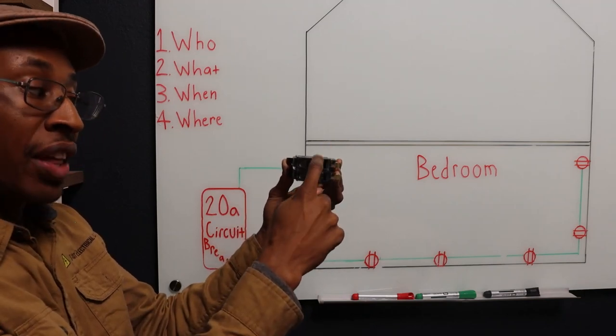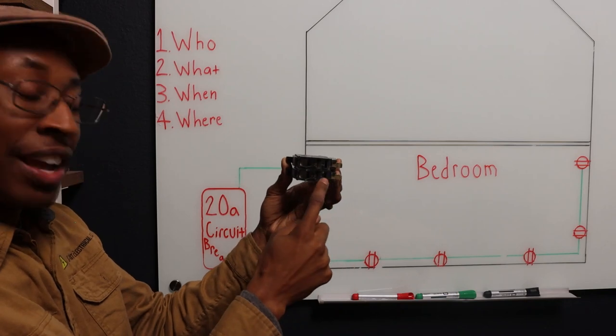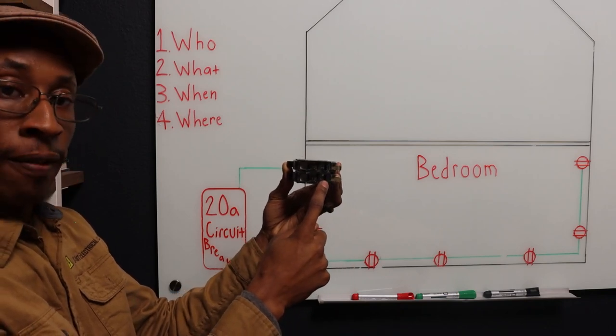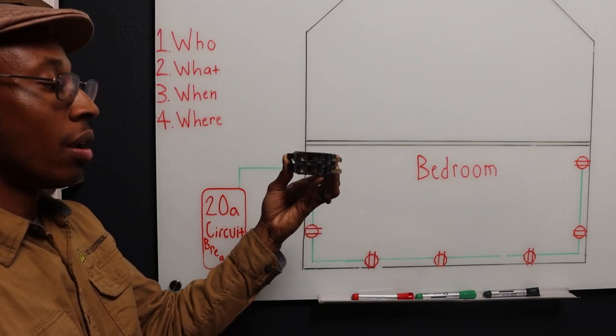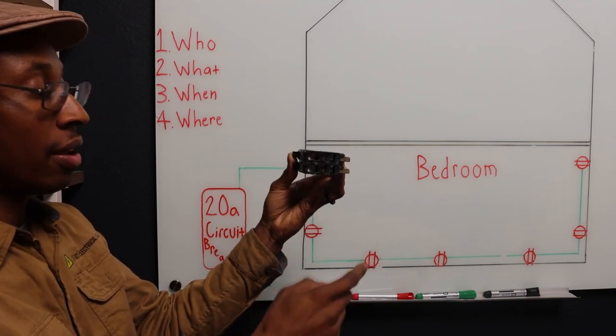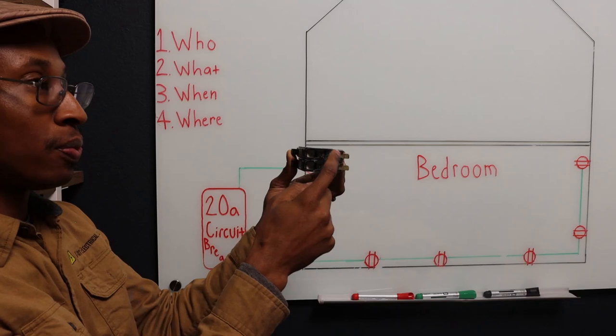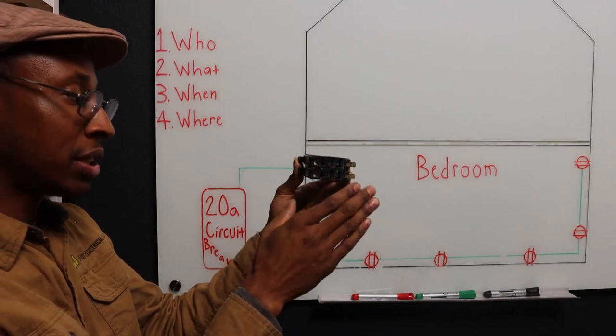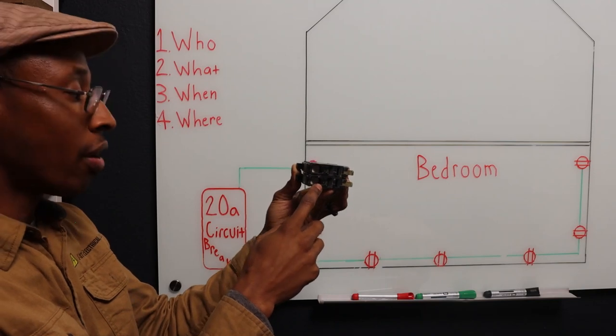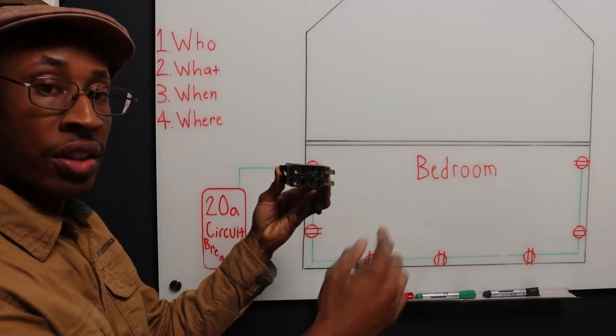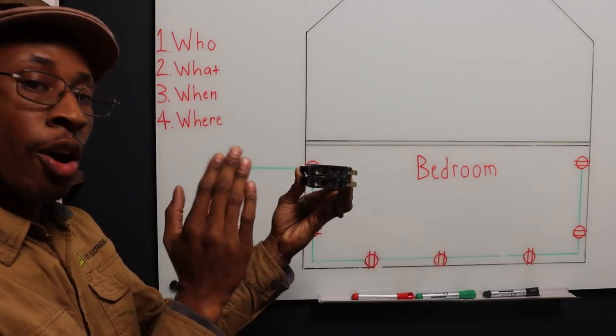The wire that you took off of this breaker, put it in the known good breaker here. So what we just established: we're going to establish if the breaker is the issue or if it's the issue down the line. Now go back and turn your power back on.